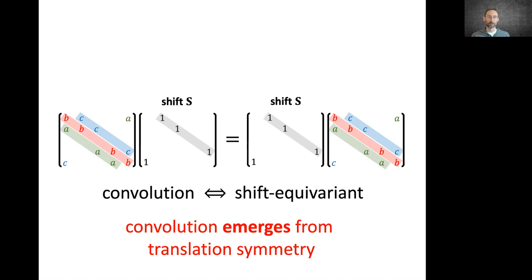Not only that, we can also see that all these matrices can be jointly diagonalized by the same eigenbasis, which can be computed in closed form as eigenvectors of the shift operator. This is the discrete Fourier transform. This duality between performing convolution in the spatial and frequency domain also emerges from this fundamental principle of symmetry. In this case, translational symmetry.